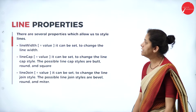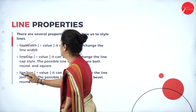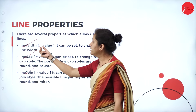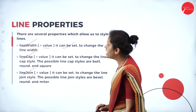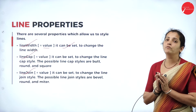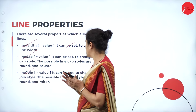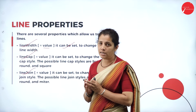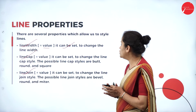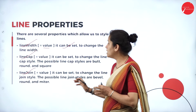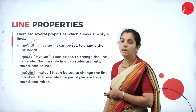There are some line properties. lineWidth — it can be set to change the width of the line. lineCap — if I want to change the cap style of the line, I'll use lineCap. lineJoin — if I want to join lines, I'll use the lineJoin property. These are the properties of a line.